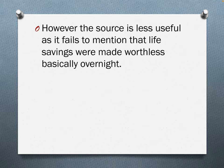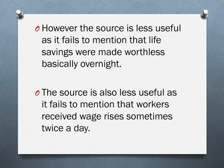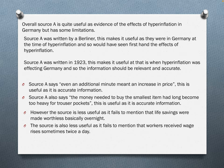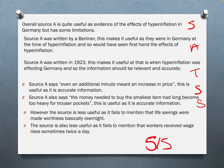Then we have to talk about things the source doesn't tell us, using our recall from class. However, the source is less useful as it fails to mention that life savings were made worthless overnight. And the source is also less useful as it fails to mention that workers received wage rises sometimes twice a day. That's two things we know to be true from class, giving us our two recall marks. Overall that answer gets us five out of five — overall judgment, author, timing, two source quotes, and two recall points.